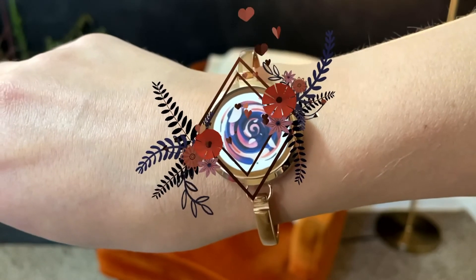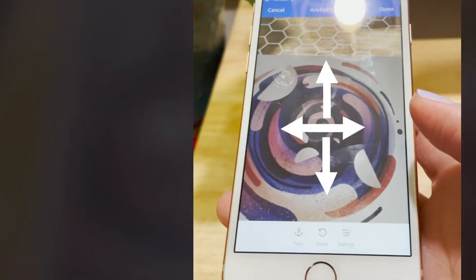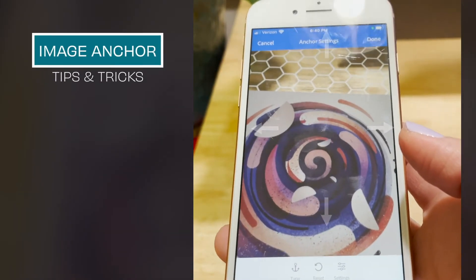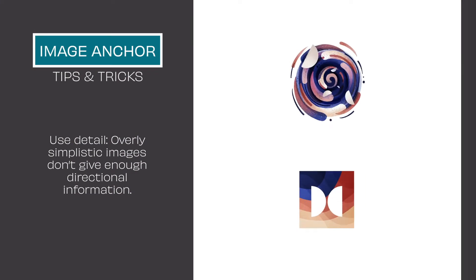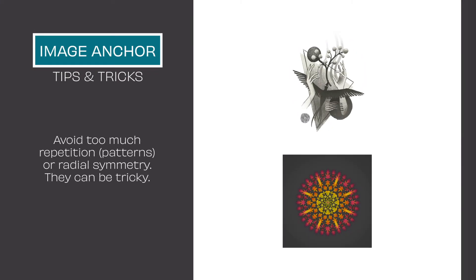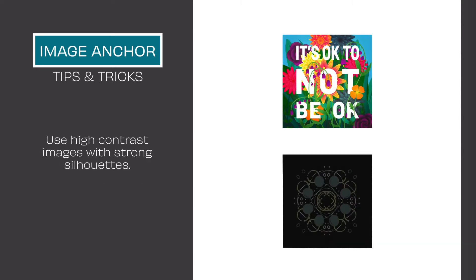Here are a few tips for creating successful image anchors. The software is using the image to orient itself, so overly simplistic images don't give enough directional information. Similarly, too much repetition or symmetry can be confusing. Lastly, use high contrast images with strong silhouettes.